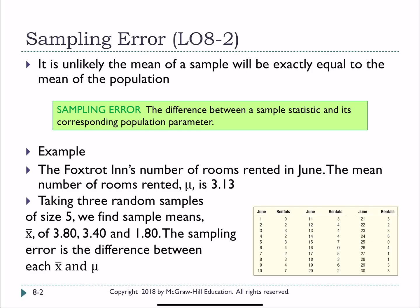And so you simply take your mu, your population mean, and you subtract x bar, your sample mean. Sometimes your sampling error will be positive if the sample mean is greater than the population mean, and other times it will be negative.